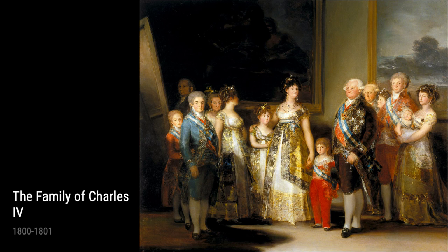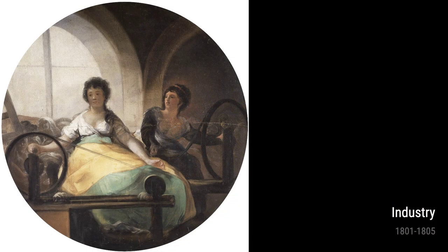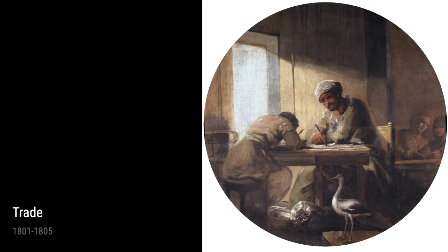Throughout his life, Goya also turned the lens on himself, creating self-portraits that reveal his introspective nature. Self-Portrait with Spectacles, from 1801, demonstrates Goya's ability to capture his own likeness with a touch of self-reflection.